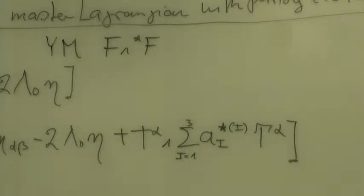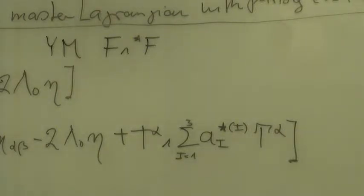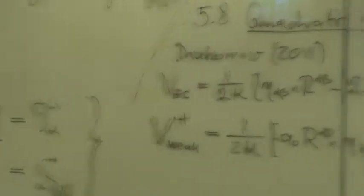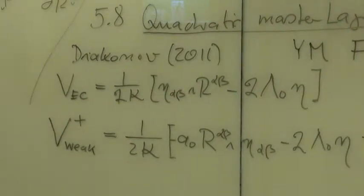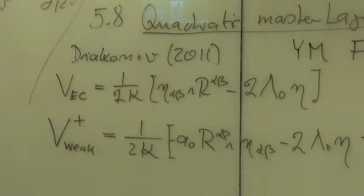So we have here three constants A1, A2, A3, and here we have A0, which we use for convenience. For Einstein-Cartan, we set A0 equal minus one.